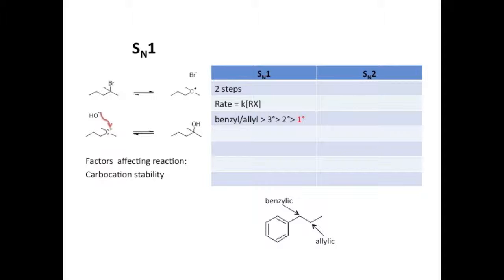But primary carbocations are just so unstable as to effectively prevent the reaction from occurring. If you see a substitutionary question regarding a primary carbon, you can rule out SN1 as its mechanism. So that's why I put primary in red here.